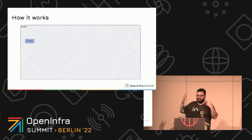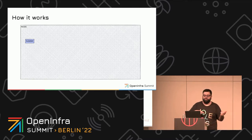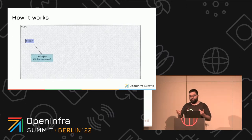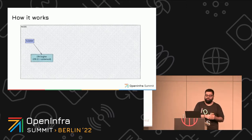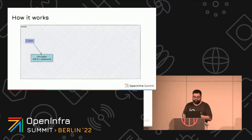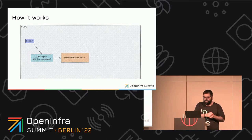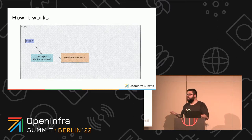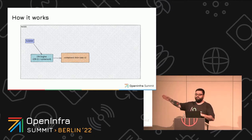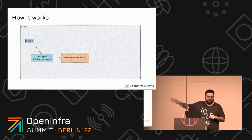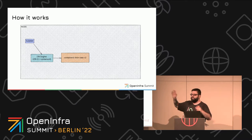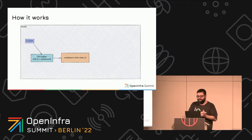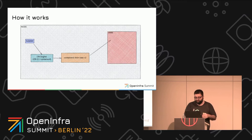How it works on the Kubernetes side: you have the kubelet daemon running on a node. A user creates a pod, kubelet receives a request, then it passes the request down to the CRI engine — which is either CRI-O or containerd. And then it will start the containerd-shim-kata-v2, which is the name of the Kata runtime. The Kata runtime then starts the VMM process.